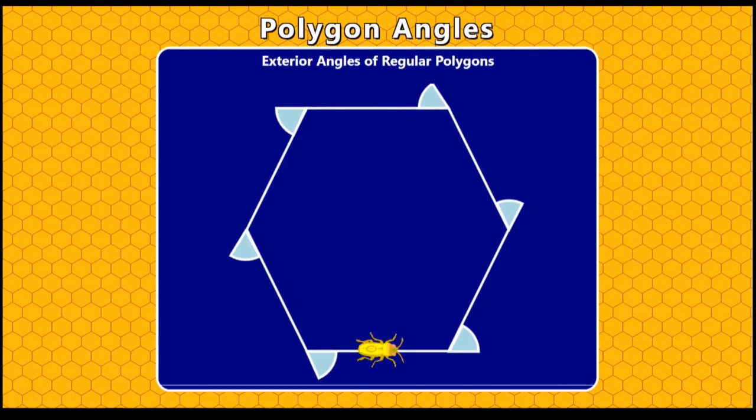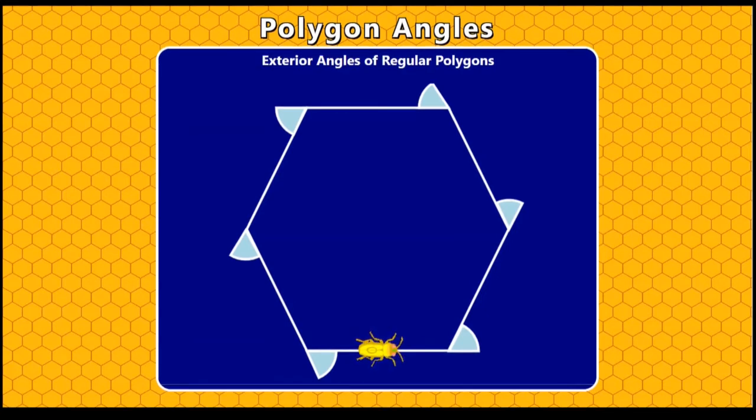So those six exterior angles must add up to 360 degrees. If we divide 360 degrees by 6, it'll give us the size of each exterior angle of this regular hexagon. And 360 degrees divided by 6 is 60 degrees. So each of the exterior angles of a regular hexagon is 60 degrees.